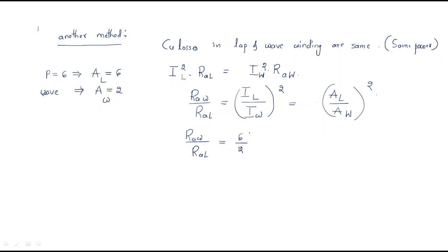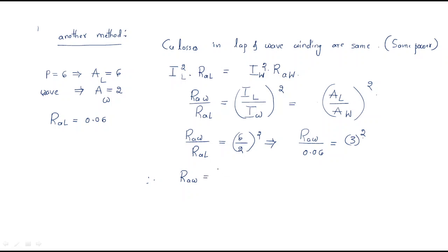R_aw / R_al equals (6/2) squared, which is 3 squared equals 9. The lap winding resistance is already given as 0.06 ohms. Substituting: R_aw / 0.06 = 9, so the wave winding armature resistance equals 0.06 × 9 = 0.54 ohms. This is the simple method to find armature resistance when switching from lap to wave winding.